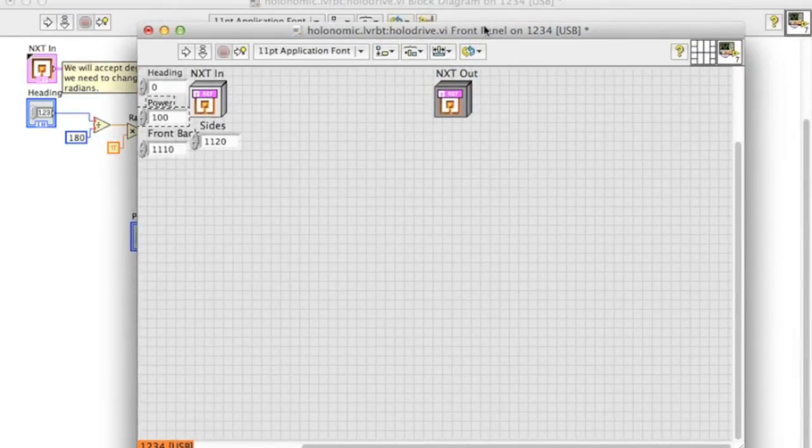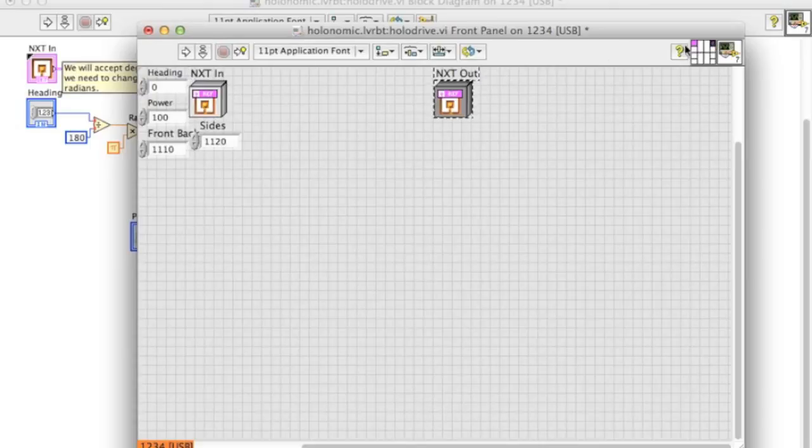Then hit Command E or Control E to bring up the front panel. And you'll see in the upper right-hand corner of the front panel the pattern. And you need to wire the portions of the panel to the inputs and the outputs.